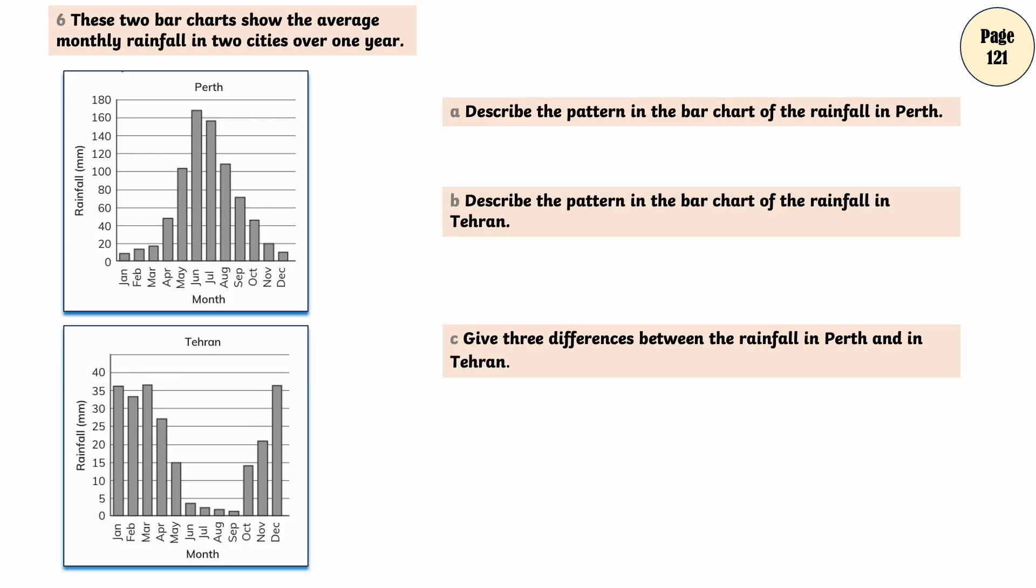These two bar charts show the average monthly rainfall in two cities over one year. Describe the pattern in the bar chart of the rainfall in Perth. The rainfall goes up and then back down.